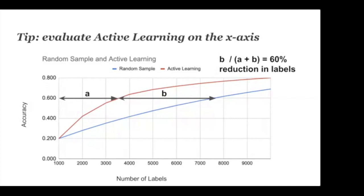When looking at learning curves for active learning, we focus on the x-axis — the reduction in human labeling cost. If our target is 60% accuracy, we compare how few labels are needed versus random sampling. For example, random sampling might need around 7,600 labels to reach 60% accuracy, while active learning requires only about 3,500 — a reduction of nearly 60%, or equivalently, random sampling requires about 120% more labels. In contrast, if you come from a machine learning background comparing model architectures, you'd typically care about the y-axis — change in accuracy given the same data.